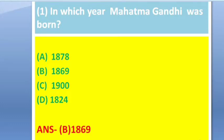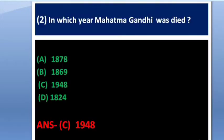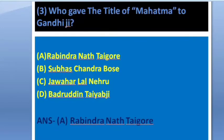Question number 2: In which year did Mahatma Gandhi die? Options: 1878, 1869, 1948, and 1824. The answer is option C — 1948. This is a most important question.